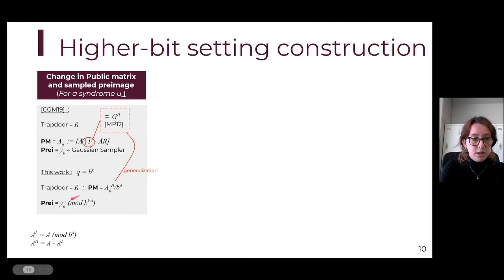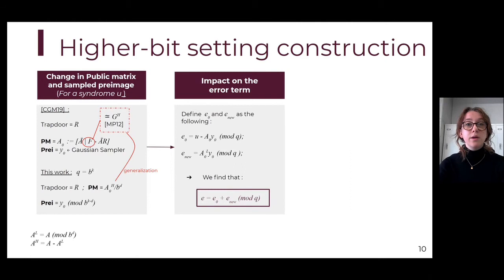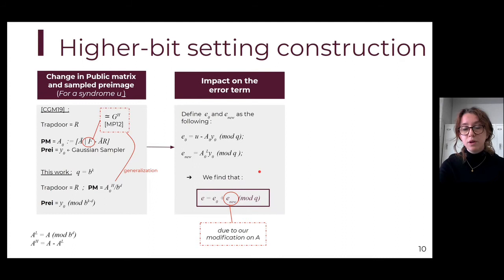We also apply a trick on the pre-image to downsize its modulus as well. This trick comes from observing that we are only interested in the product of the public matrix with the pre-image. Now that we have discarded low-weighted bits in the public matrix, the high-weighted bits in the pre-image are no longer needed in the product, so we discard them too and thereby downsize the modulus. Unfortunately, this change in the public matrix and the sampled pre-image increases the error term. The original error term is increased by a new one due to our modification — essentially the low-weighted bits of the public matrix multiplied by the pre-image — which will have an impact on security.